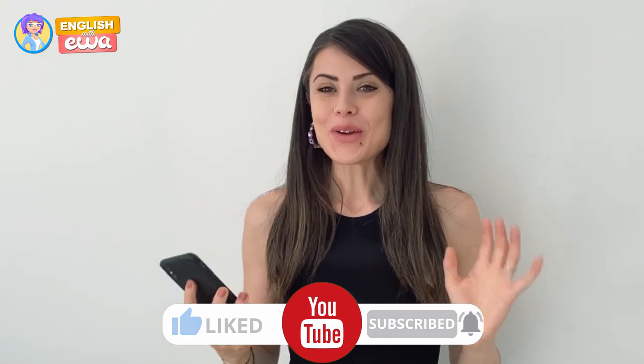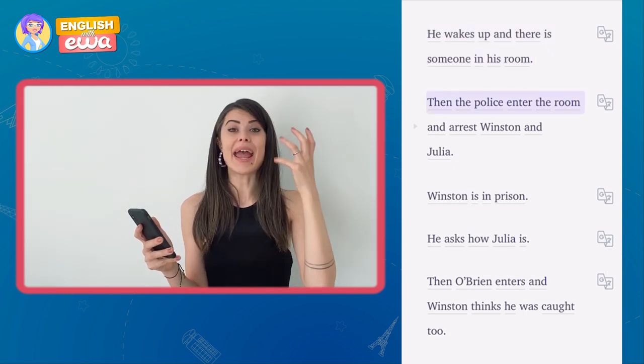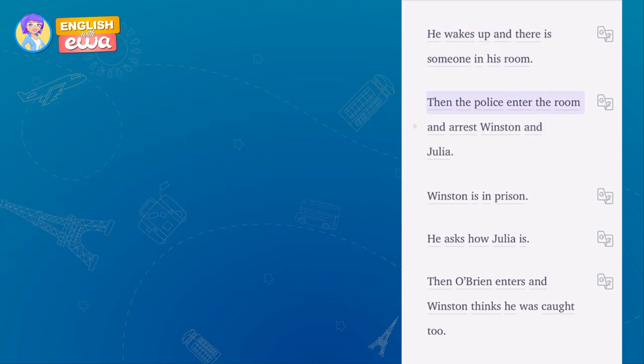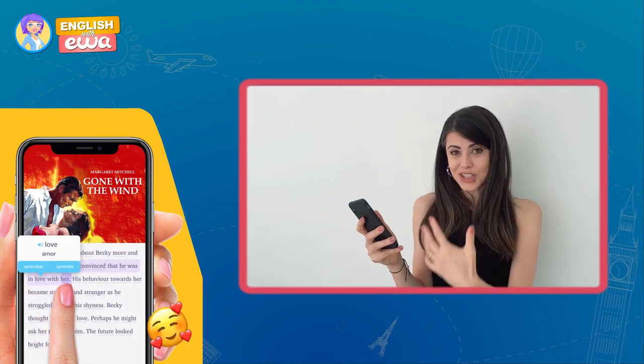In today's video we are going to be reading together 1984 by George Orwell. This is my favorite book and I really love how it works on the app because you can actually read the book and listen to it, so you can improve your reading and pronunciation at the same time. When you find words you don't understand, you can simply click on the word and add it to your flashcards, which helps you review them later.